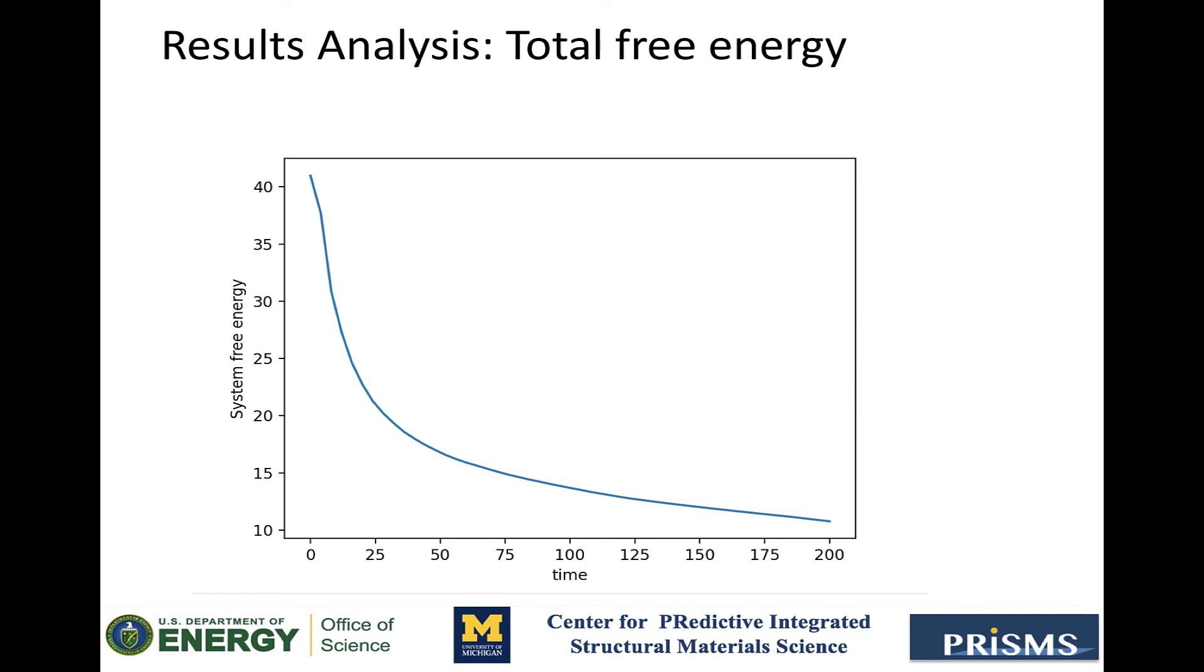If for any time interval, the total free energy increases, that means there is something wrong with either the dynamics or the calculation of the free energy. Now I would like to showcase the post-processing scripts that we released recently, which use the visit CLI to perform some simple data analysis directly on the .vtu files that prism.pf outputs. These scripts are in the directory post-processing scripts. So to use them, let's copy them into our application folder.